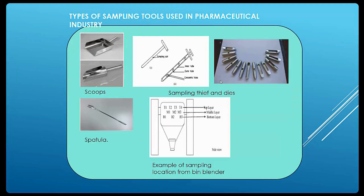Different types of sampling tools are used in pharmaceutical manufacturing. One main sampling tool is the sampling rod. In the pharmaceutical industry, tools are made of stainless steel SS316 grade, because it is corrosion-resistant and easy to clean and use.